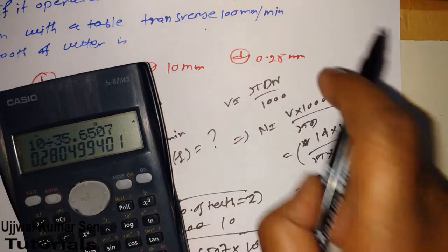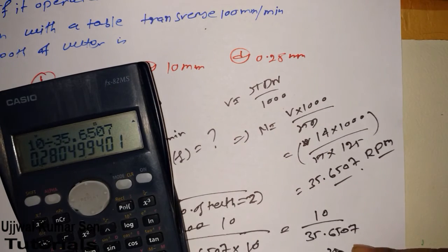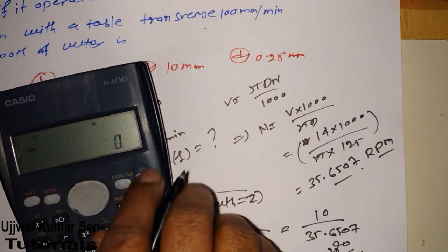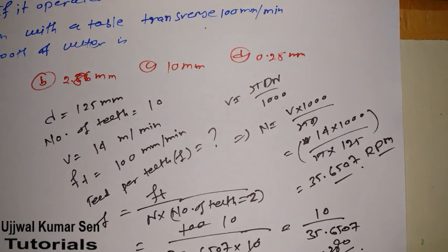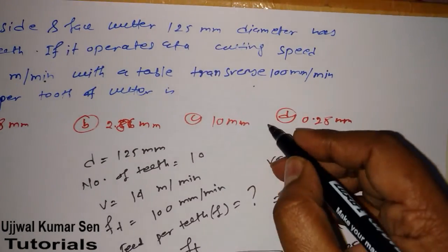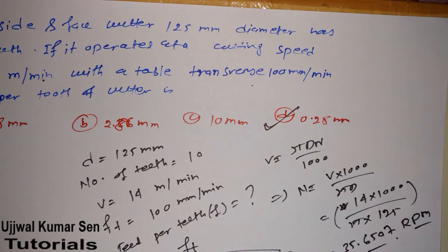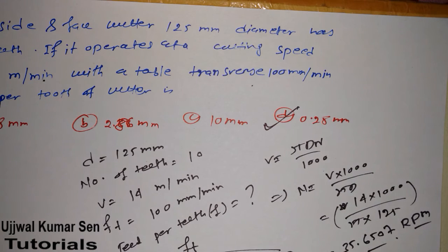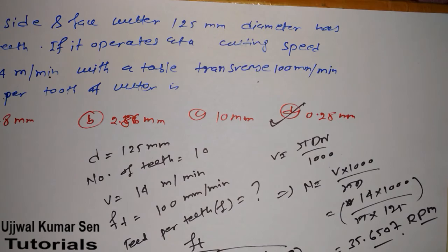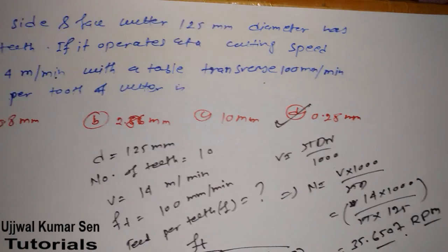The answer we're getting is 0.280. So this is the feed per tooth, and this is the right answer: 0.280.